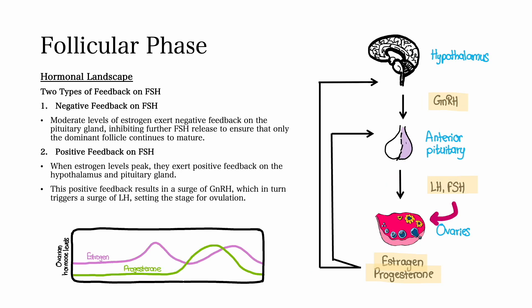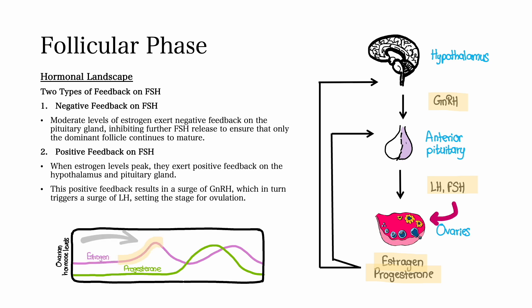It is during this phase that the concept of positive and negative feedback become important — the amount of estrogen determines the type of feedback. Moderate levels of estrogen exert negative feedback on the pituitary gland, inhibiting further FSH release to ensure that only one dominant follicle continues to mature. When estrogen levels peak, they exert positive feedback on the hypothalamus and pituitary gland, resulting in a surge of gonadotropin-releasing hormone, which in turn triggers a surge of LH, setting the stage for ovulation.